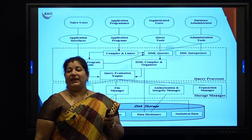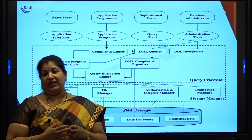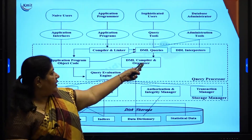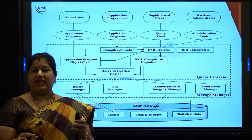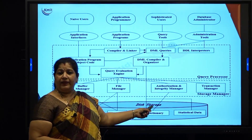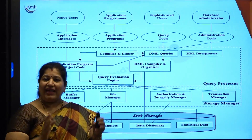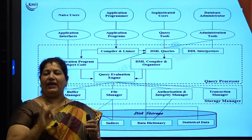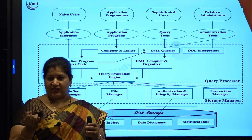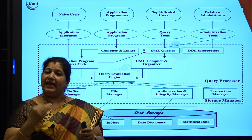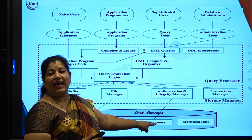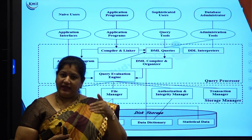The DDL interpreter handles the definition or schema of the database. When the database administrator designs the structure, the DDL interpreter handles the creation and storage of data — it is responsible for the structure and the metadata. Metadata is data about the data. For example, a student table contains student number, name, and CGPA. Student number may be an integer or text field, name is text, and CGPA may be a real number with a decimal point. This information is stored in data dictionaries as schema and metadata.